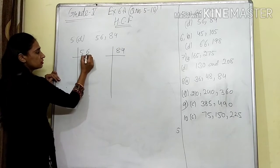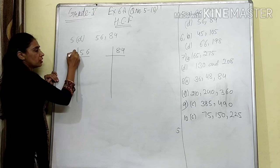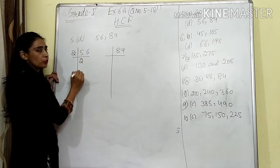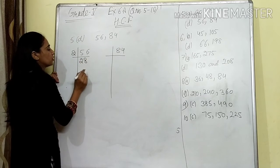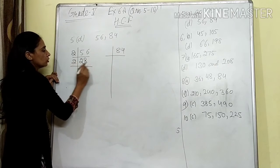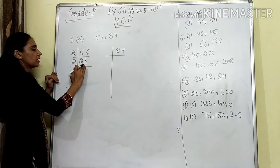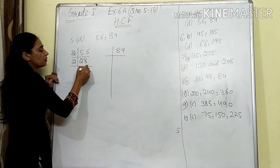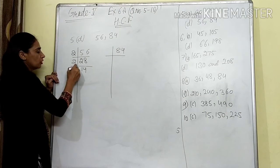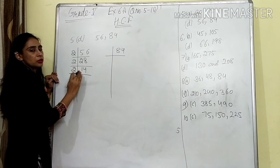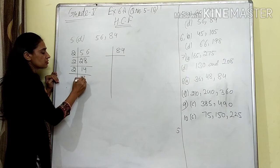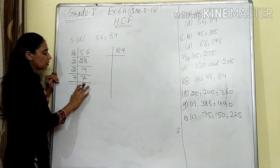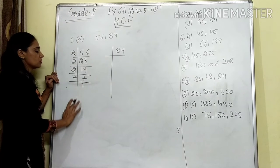We know that the last digit of 56 is even, so it is divisible by 2. When we divide 56 by 2, we get 28. When we divide 28 by 2, we get 14. When we divide 14 by 2, we get 7.